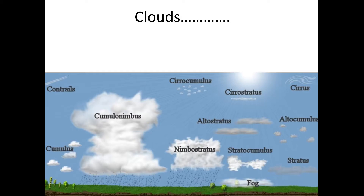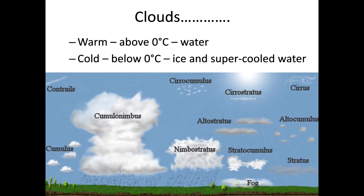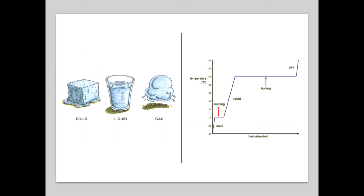I have good news: you don't need to know all the different cloud names. I am a fully paid-up cloud geek — I'm actually a member of the Cloud Appreciation Society, yes, there is such a thing — but at the moment, you just need to know that there are clouds, and that clouds are collections of water droplets or ice crystals or snowflakes. They are part of the water cycle. We classify clouds by temperature: a warm cloud is where every particle of water is a liquid, so it's above zero, and a cold cloud is where it's below zero and some of the water has frozen.